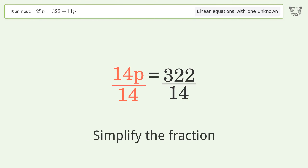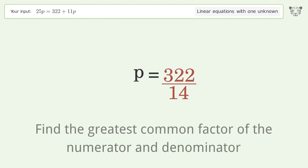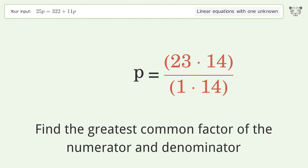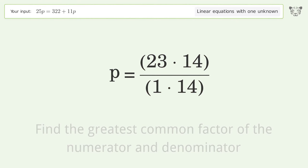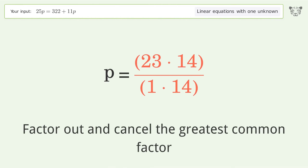Simplify the fraction by finding the greatest common factor of the numerator and denominator, then factor out and cancel the greatest common factor.